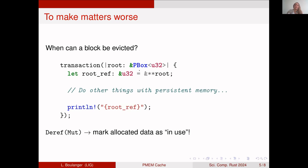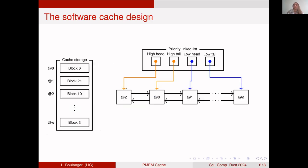We have to go through our library and make sure that when you reference something that allocates into persistent memory, we mark the data as pinned so it cannot be evicted. This ties into the design of the cache.